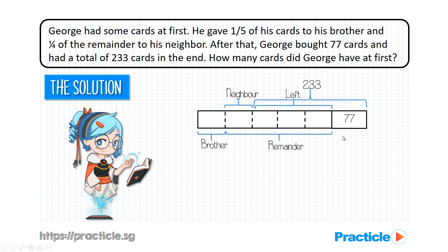By looking at the known parts in the model, we should be able to tell that we can find the value of these 3 units over here by taking 233 minus 77. Correct? So, this gives us the value of 156. And since we know 3 units equals to 156, we can move on to find the value of 1 unit by taking 156 divided by 3, which gives us 52.